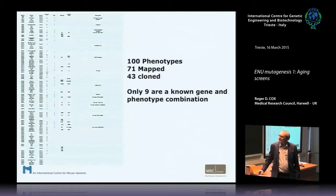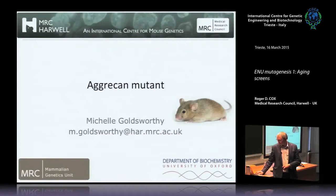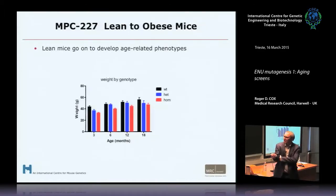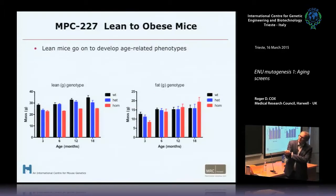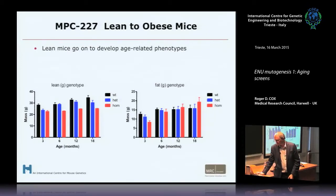More summary statistics: 100 phenotypes, 71 mapped, 43 cloned. The Agri-Can mutant, which scientist Michelle Goldsworthy in the group has been working on, has come out recently. These homozygous mice start out with low weight and have reduced lean mass compared to heterozygotes and wild types, but they also show an increase in fat mass at 18 months. So this is a late onset phenotype — these 18-month-old animals have significantly increased fat mass, which could point to a novel role for Agri-Can in adipose tissue.